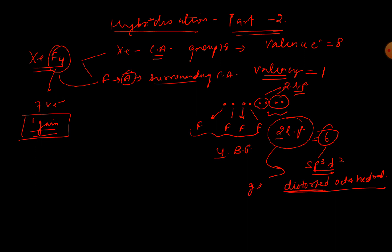This is the geometry. So what will be the shape of it? For sp3d2 where we have got four bond pairs and two lone pairs, the shape is square planar.